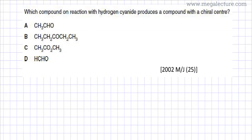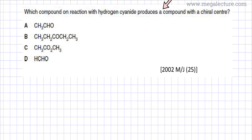In the following past paper question, the question states: which compound on reaction with hydrogen cyanide (HCN) produces a compound with a chiral center? You are given four options.